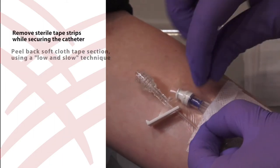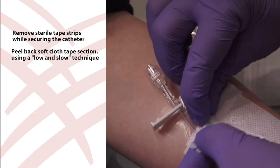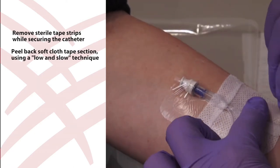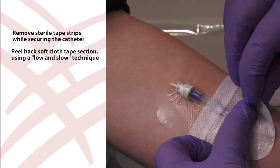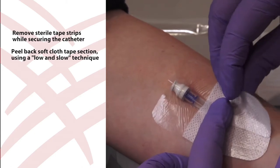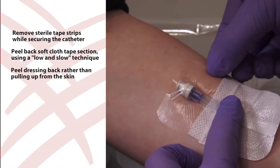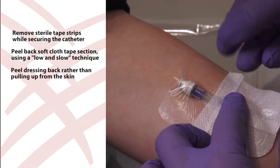Carefully peel back the soft cloth tape section using a low and slow technique by gently grasping an edge and slowly peeling the dressing from the skin in the direction of hair growth. Avoid skin trauma by peeling the dressing back rather than pulling it up from the skin.